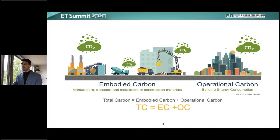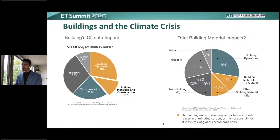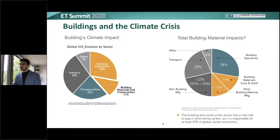To know the total impact of a building, we must address both operational and embodied carbon. The building and construction sector is responsible for 39% of global carbon emissions. Between now and 2050, embodied carbon will make up nearly half of the building sector CO2 emissions. It turns out that producing our raw materials and putting them together is incredibly energy and resource intensive.